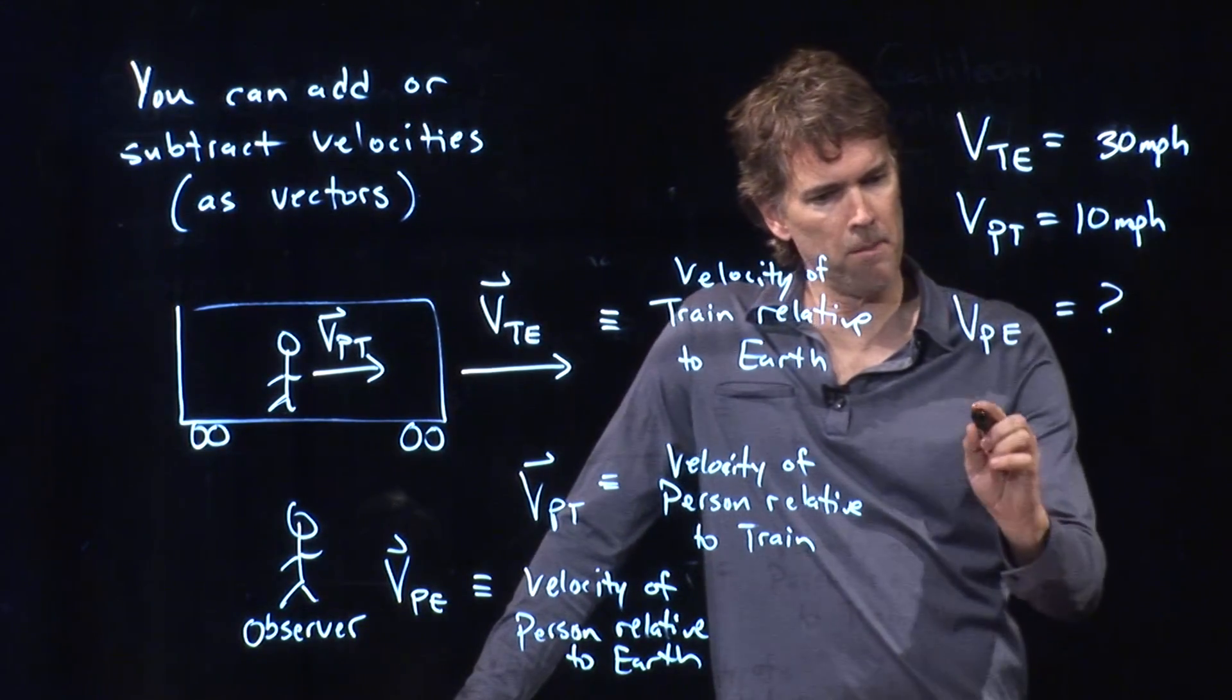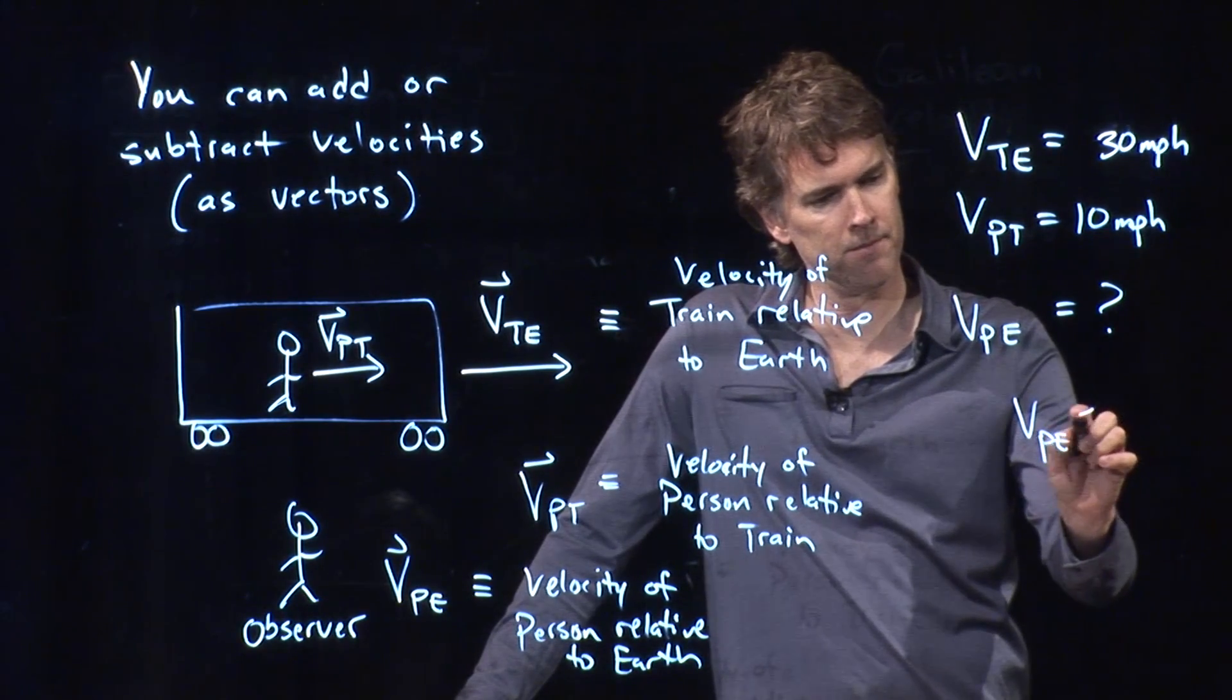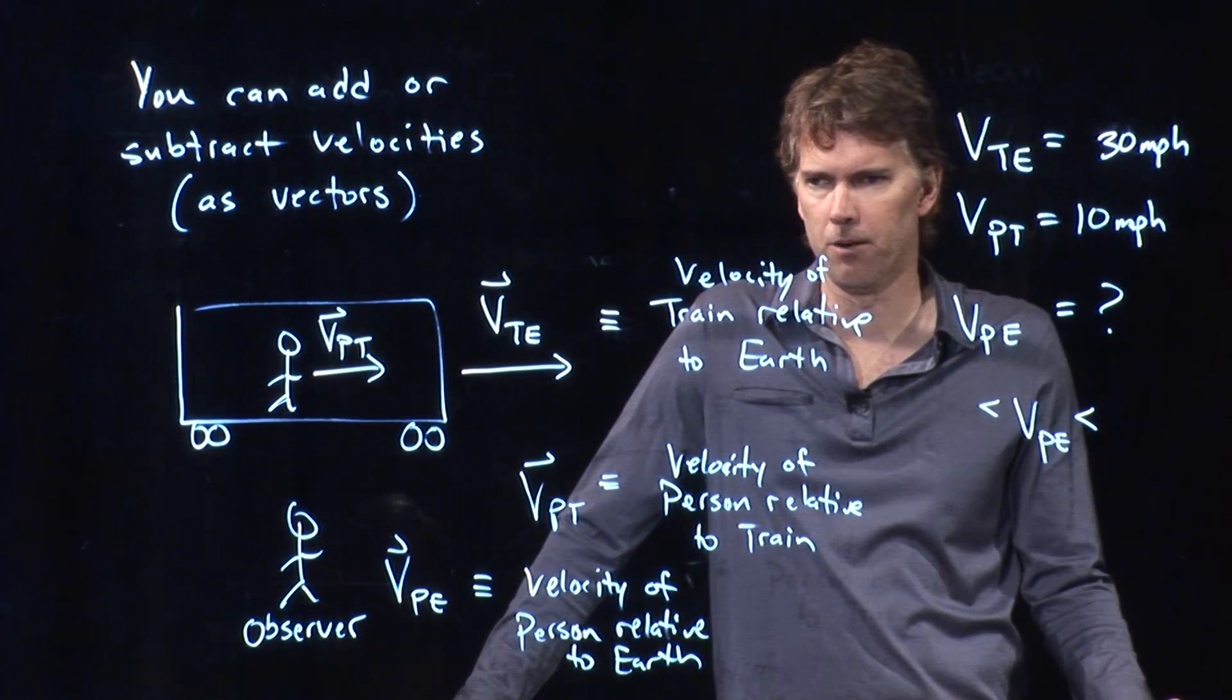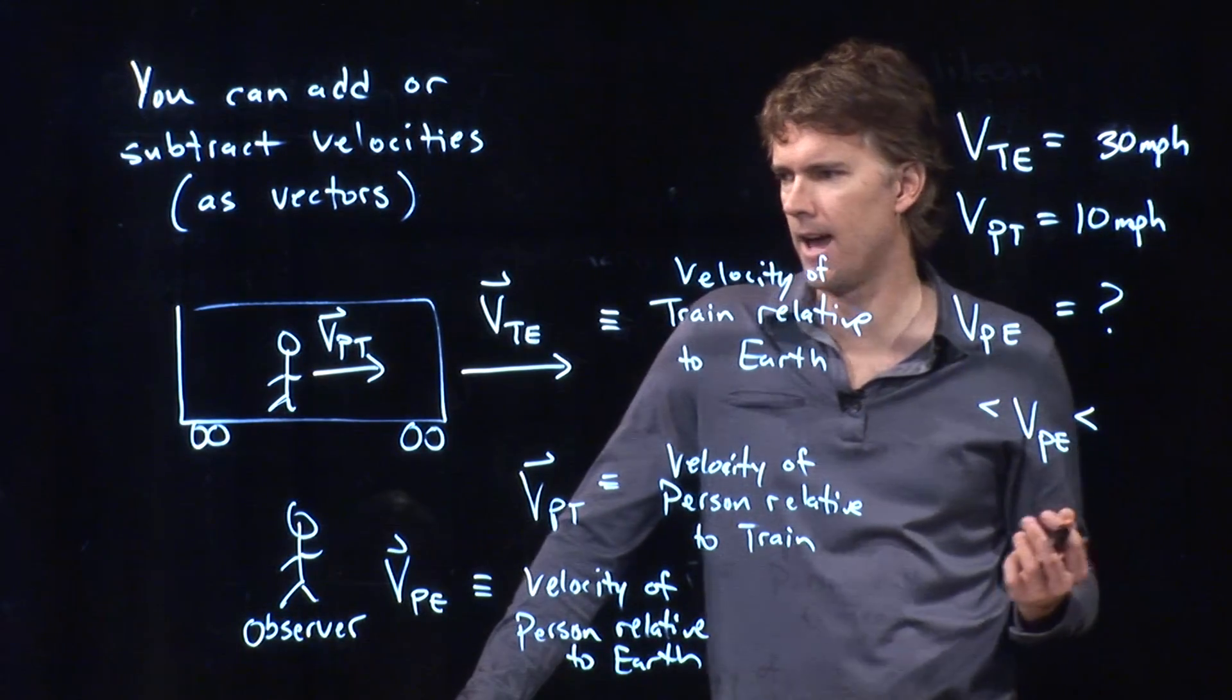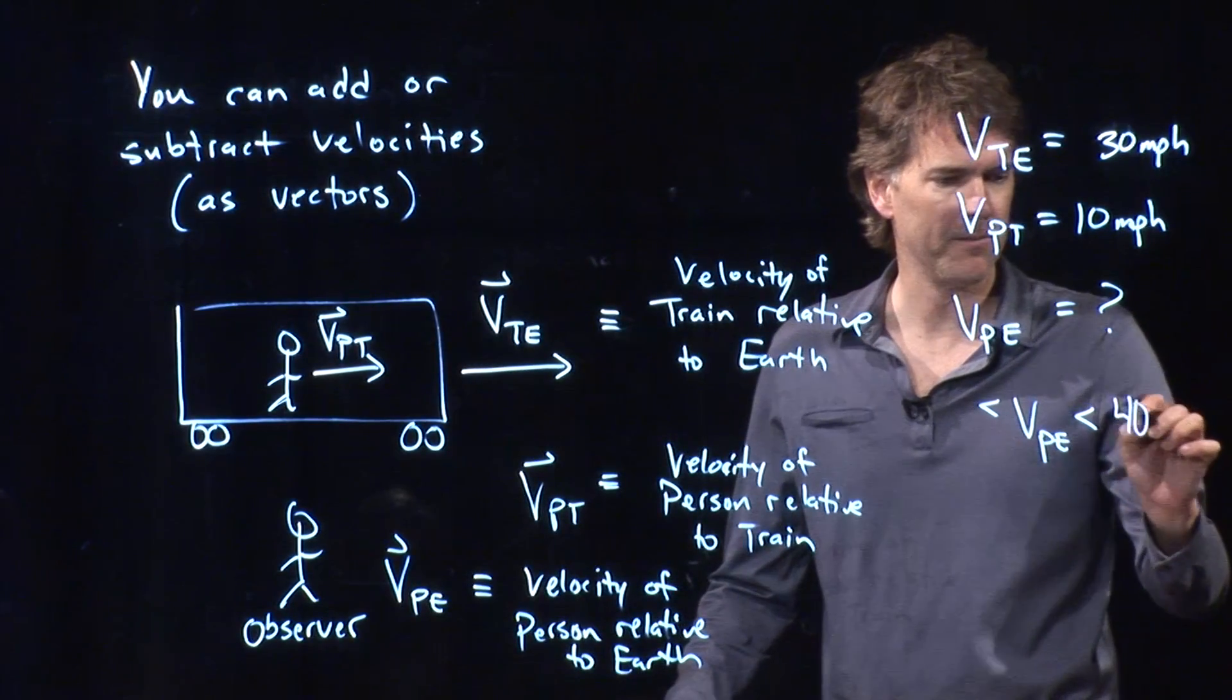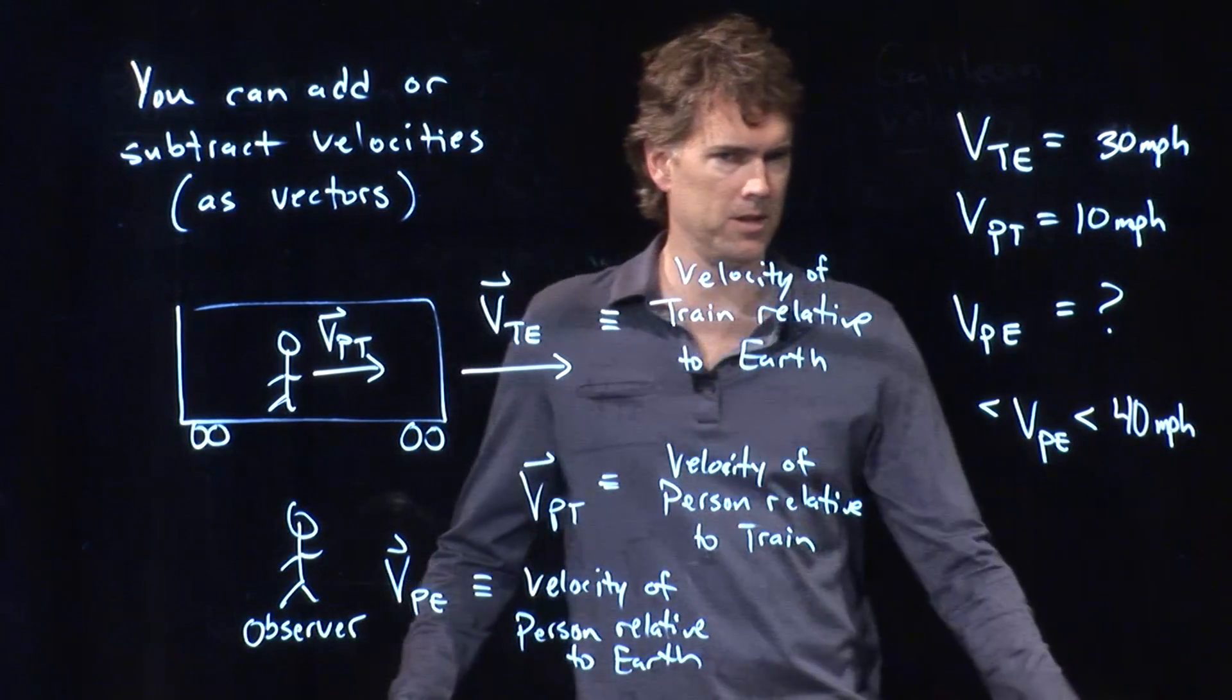And now we need to figure out VPE. What is the biggest that VPE could be? What's the biggest that VPE could possibly be? We already said the answer to this, right? It's if you're walking in the same direction as the train's moving. The biggest it could be is 40.